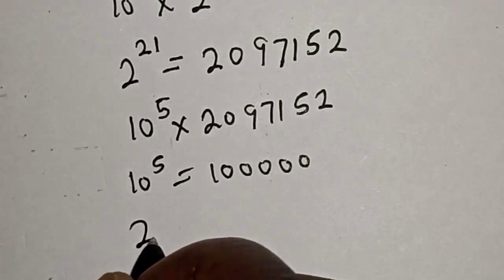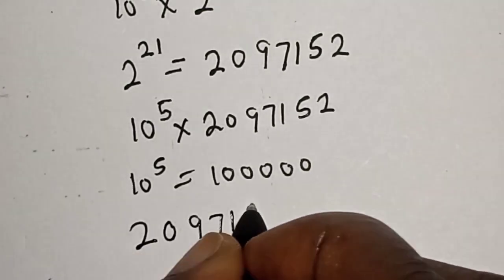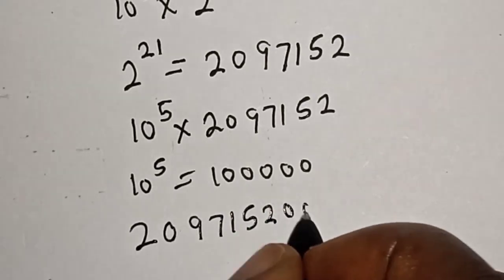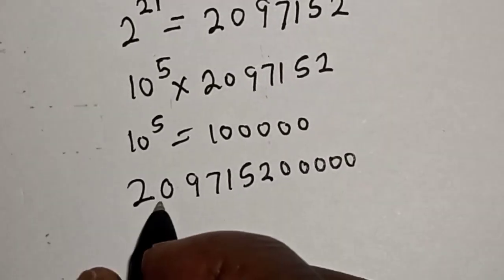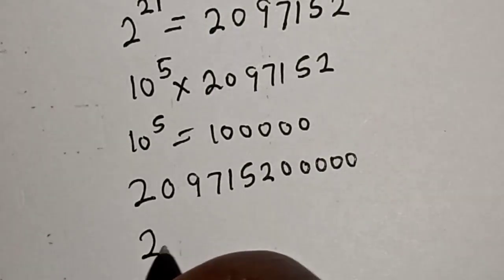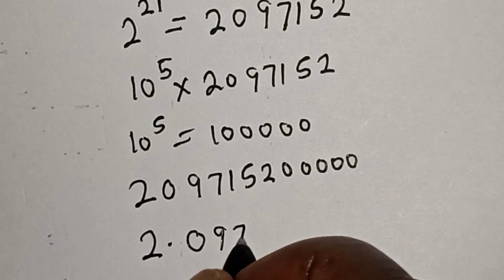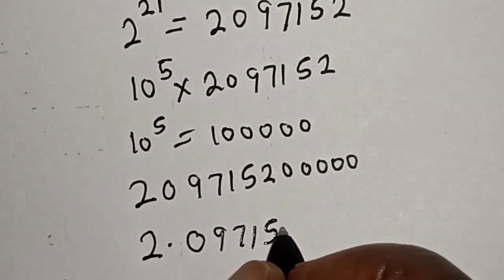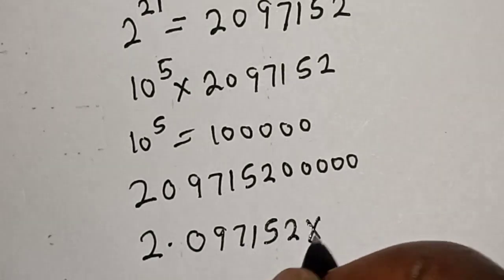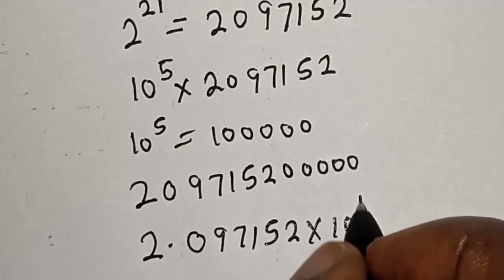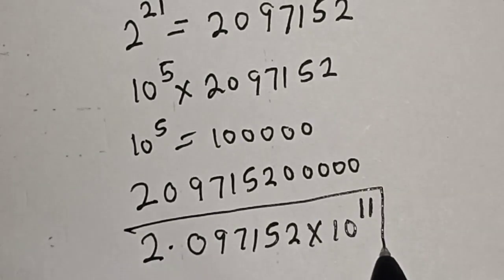If you multiply everything together we have 209,715,200,000. Now to put it back in standard form, we have 2.097152 times 10 raised to power 11. That is our final answer.